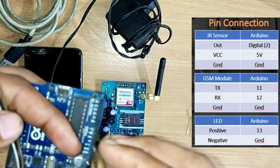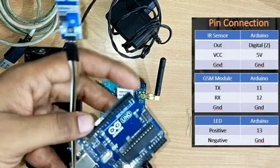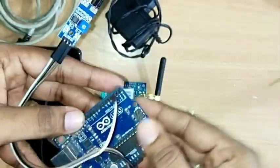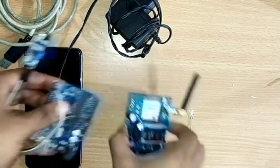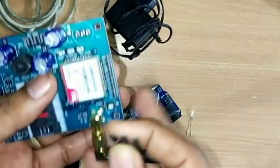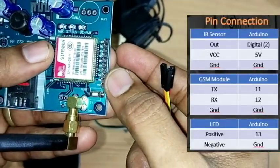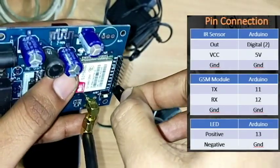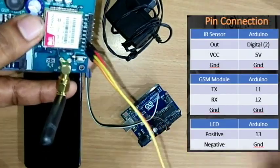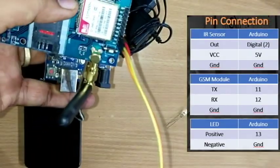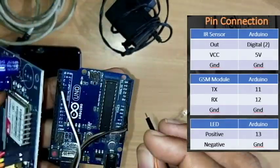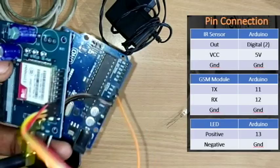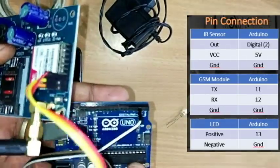Third, connect the Output pin of the IR sensor to digital pin 2 on the Arduino. For the GSM module, connect Ground to GND. TX goes to Arduino pin 11 and RX goes to pin 12. We use software serial with those ports.